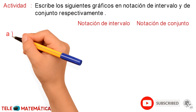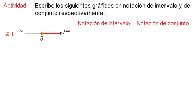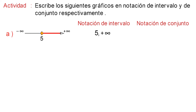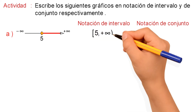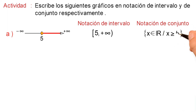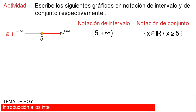Literal A. Tenemos el gráfico, donde su notación de intervalo es 5 coma más infinito con corchete cerrado a la izquierda y paréntesis a la derecha. Y su notación de conjunto es, entre llaves, donde todos los valores de X pertenecen al conjunto de los números reales, tal que X es mayor o igual que 5.